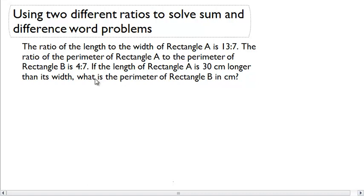Using two different ratios to solve sum and difference word problems. The ratio of the length to the width of Rectangle A is 13 to 7. The ratio of the perimeter of Rectangle A to the perimeter of Rectangle B is 4 to 7. If the length of Rectangle A is 30 centimeters longer than its width, what is the perimeter of Rectangle B in centimeters?